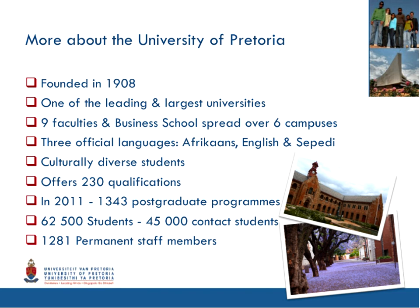More about my institution: it was founded in 1908 and is one of the leading and largest universities in South Africa. We have nine faculties as well as a business school, and we are spread over six campuses. We also have three official languages — Afrikaans, English, and Sepedi — for communication, although researchers and classes are mostly presented in Afrikaans and English. We have a very culturally diverse student population, offer 250 qualifications, and had more than 1,000 postgraduate programs in 2011. Our total student population is 62,500, of which 45,000 are contact students, and we have about 1,281 permanent staff members.